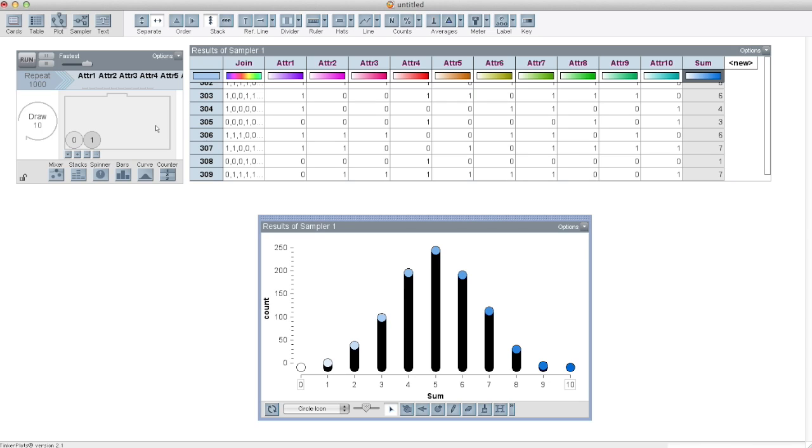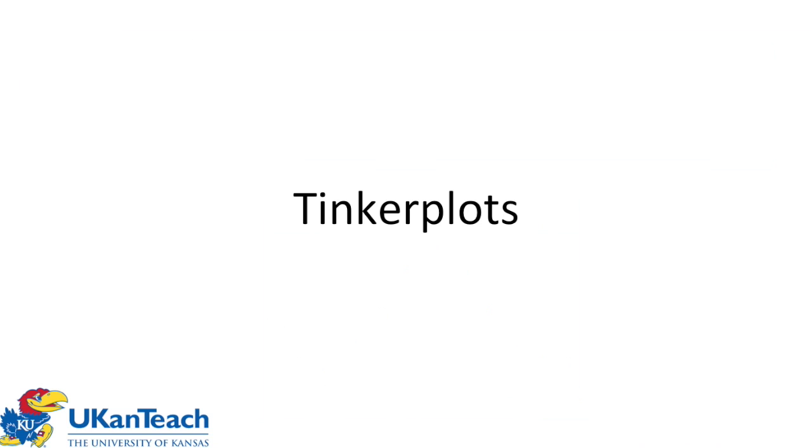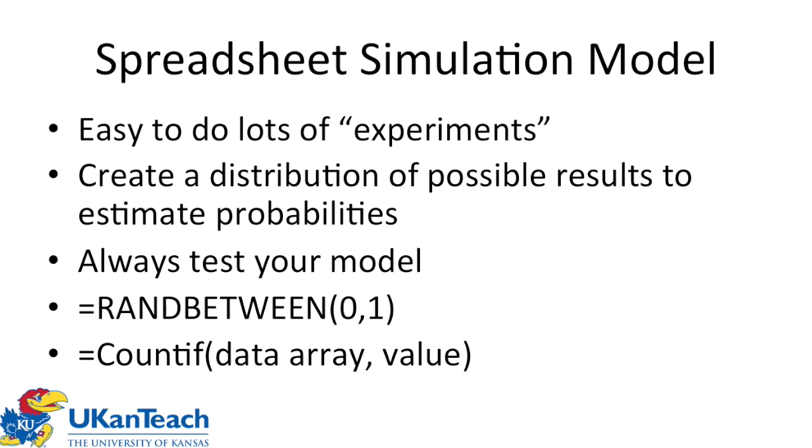Now, not everybody has tinker plots. I understand that. But it might be worth getting. And there's a high school version called Fathom that is equally, it's actually even more powerful and more appropriate for a high school biology classroom. But we could switch over to a spreadsheet. Because almost everybody has a spreadsheet. And now, I know that some people are challenged by spreadsheets, but with a little bit of work, you can do the same kind of stuff. And once you start becoming more familiar with them, they work pretty well. But the one thing you do have to do with a spreadsheet, you have to constantly test to make sure that the results you're getting make sense.